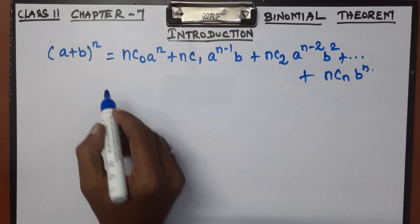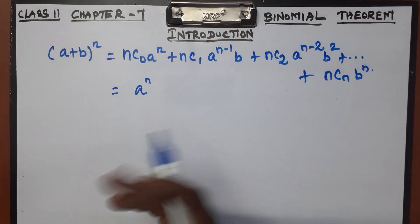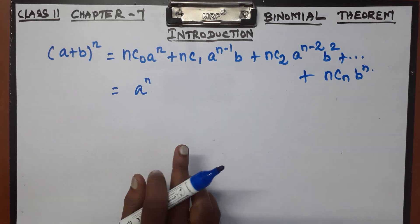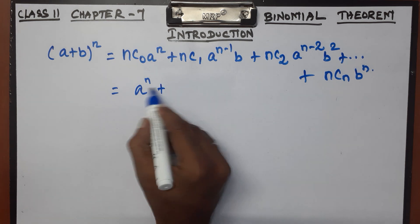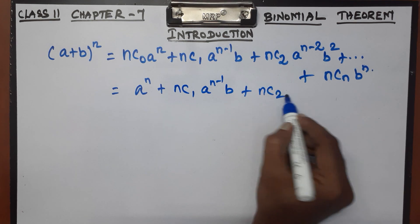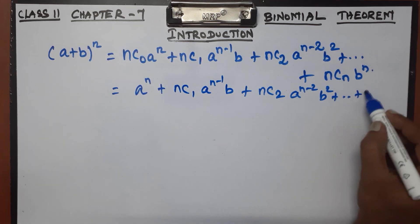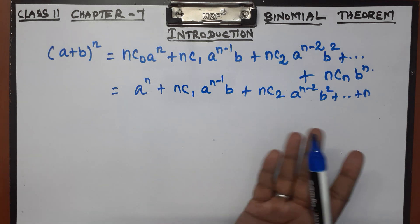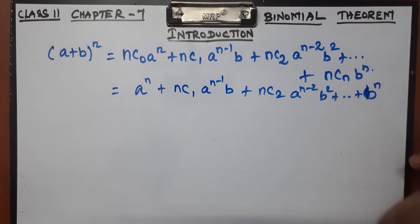To simplify: nC0 equals 1 (since 5C0, 6C0, 7C0 are all 1), so the first term is just a^n. Similarly, nCn equals 1 (since 4C4, 5C5, 6C6 are all 1), so the last term is simply b^n.